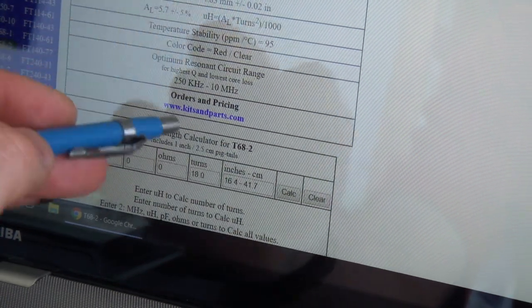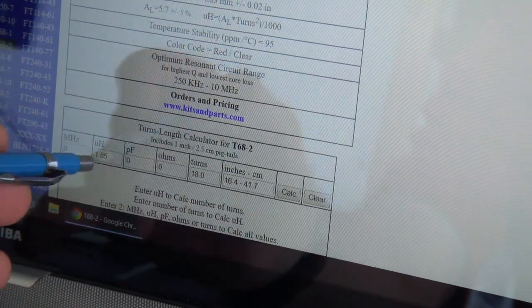So anyway, for us, I've gone with 18 turns, and gives us 1.85 microhenries.